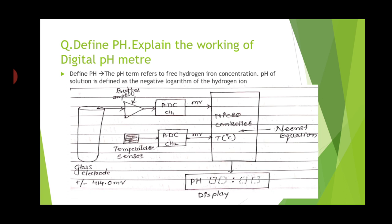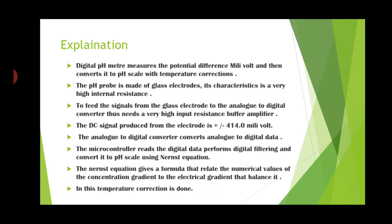Digital pH meters measure the potential difference in millivolts, then convert this potential to the pH scale with temperature correction. The pH probe is made of a glass electrode with very high internal resistance. To feed the signals from the glass electrode to the analog-to-digital converter, a very high input resistance buffer amplifier is needed. The DC signal produced from the electrodes is ±414.0 millivolts. The analog-to-digital converter converts the analog signal to digital data.